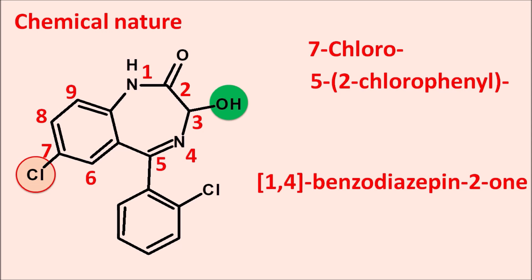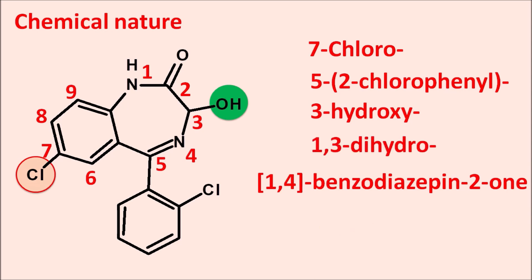Because of this hydroxyl group, lorazepam is a short-acting benzodiazepine. The presence of the -OH group makes the molecule somewhat polar, so it can be directly conjugated and excreted without significant phase-one metabolism. That is why this drug has a short duration of action. The -OH at the third position is written as 3-hydroxy, and saturation at positions one and three is noted as 1,3-dihydro — completing the full chemical name of lorazepam.